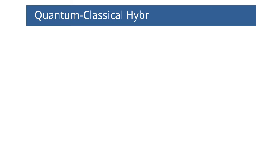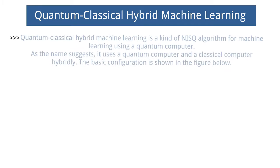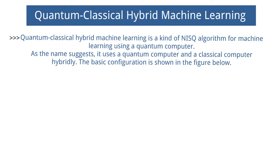Quantum-classical hybrid machine learning is a kind of NISQ algorithm for machine learning using a quantum computer. As the name suggests, it uses a quantum computer and a classical computer hybridly. The basic configuration is shown in the figure below.